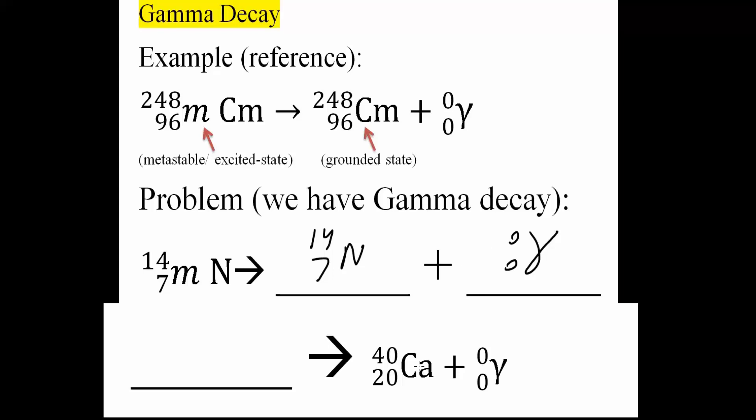Now let's do a second problem. Here we have calcium, and it's in its ground state. Now we simply need to do this. So we have 40, 20, and a metasymbol, M, and C, A. And that's all we need to do for gamma decay.